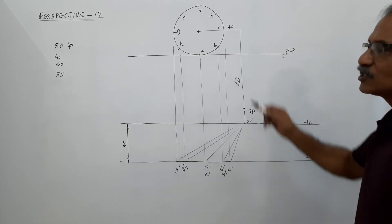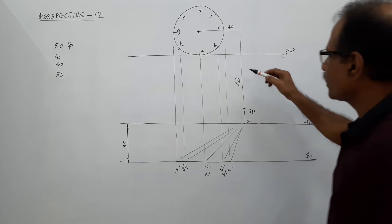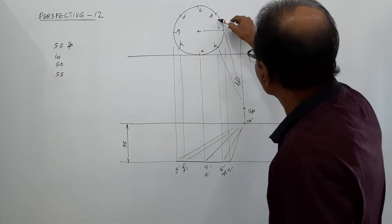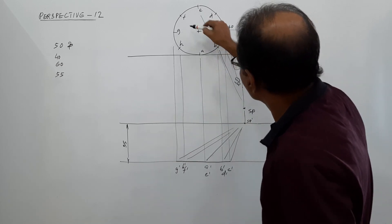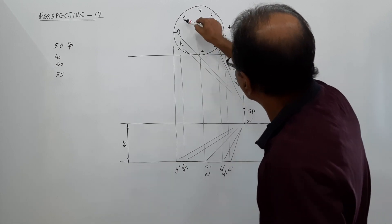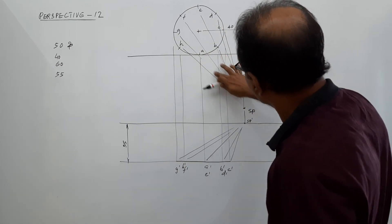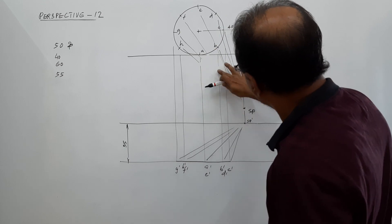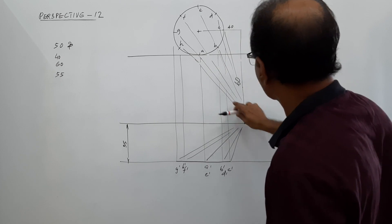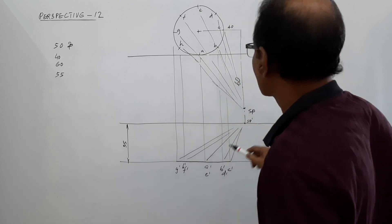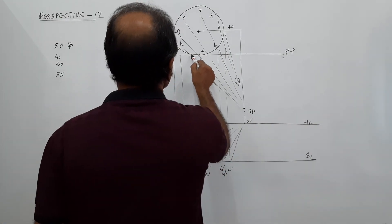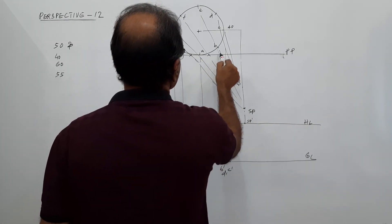Then join all points of the plan of the lamina to SP. Without instruments it is very difficult to draw accurately. Now let's mark the intercepts — these are a few intercepts we need to find.